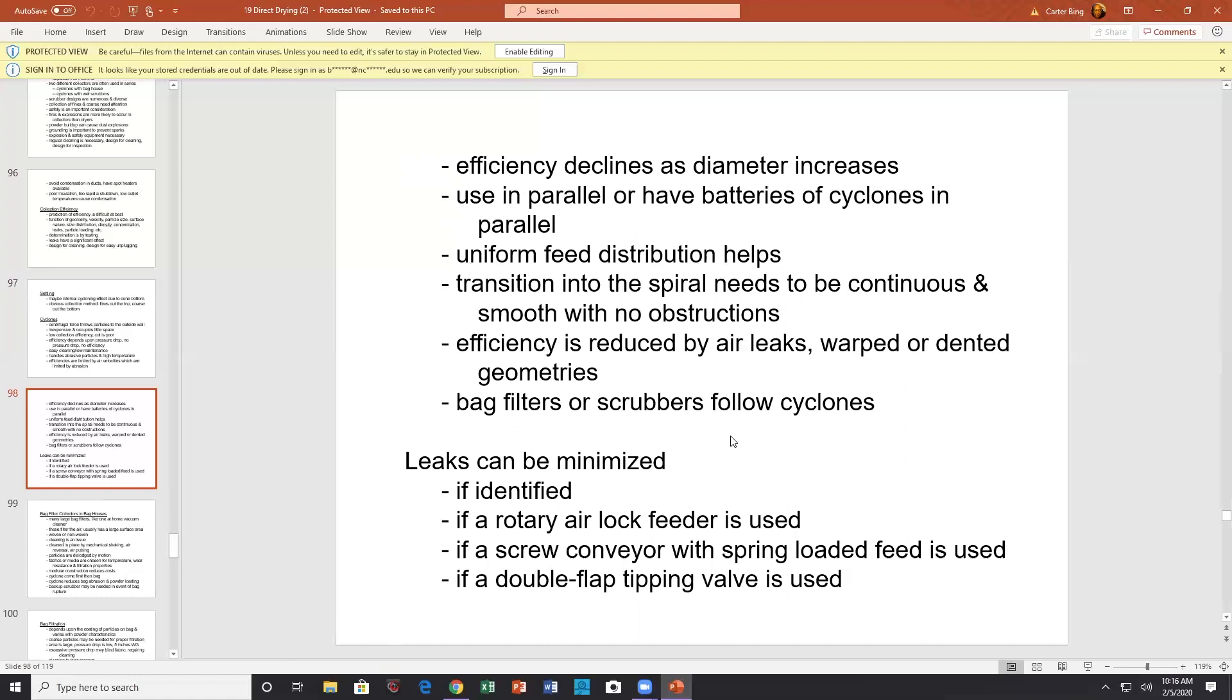Used in parallel are batteries of cyclones. Uniform feed helps. Distribution in the spiral needs to be continuous and smooth with no obstructions. Efficiencies reduced by air leaks, warps, and dents in the geometry. Bag houses, scrubbers usually follow. Leaks can be minimized if identified, if a rotary lock feeder is used. Screw conveyor, spring-loaded feed. Let's use double flap tipping valve. I've got to figure out what that thing looks like.